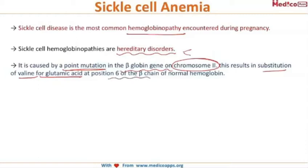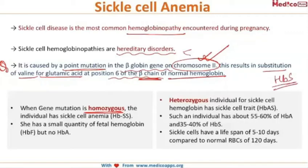This is a very important exam question: sickle cell anemia is caused by a point mutation in the beta globin gene on chromosome number 11, with substitution of valine for glutamic acid at the sixth position of the beta chain of normal hemoglobin. This mutation leads to the formation of HbS.